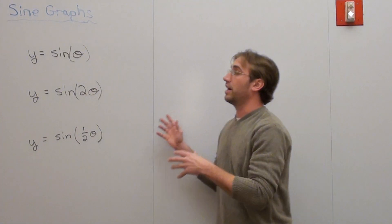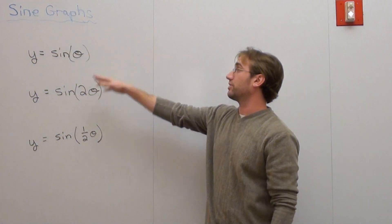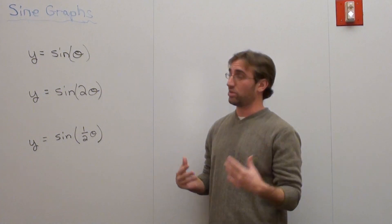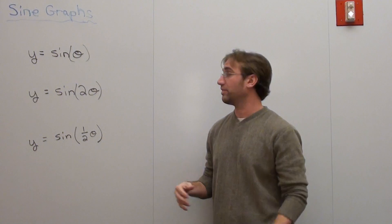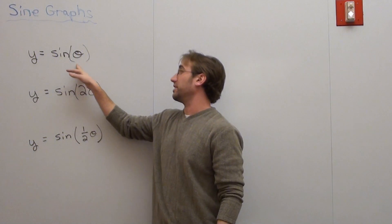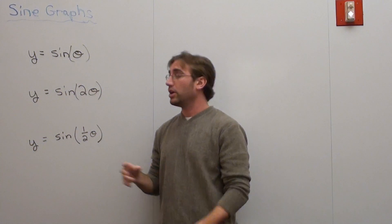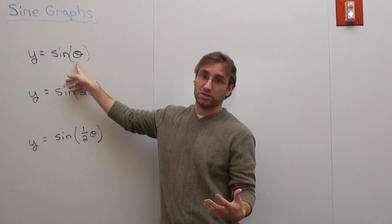Starting on trig graphs, specifically the sine graph first. I wrote three examples down of the same type of graph: y equals the sine of theta. Theta just stands for an angle; you can actually put x in if you want as well.